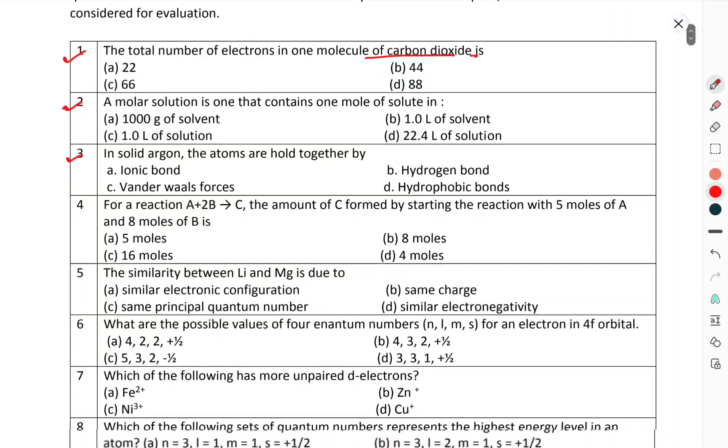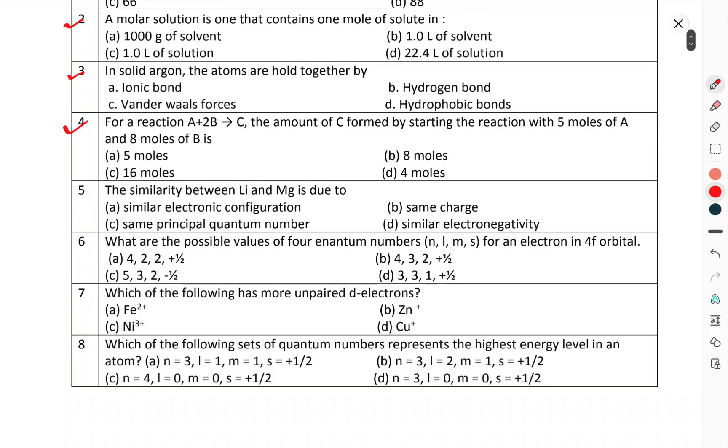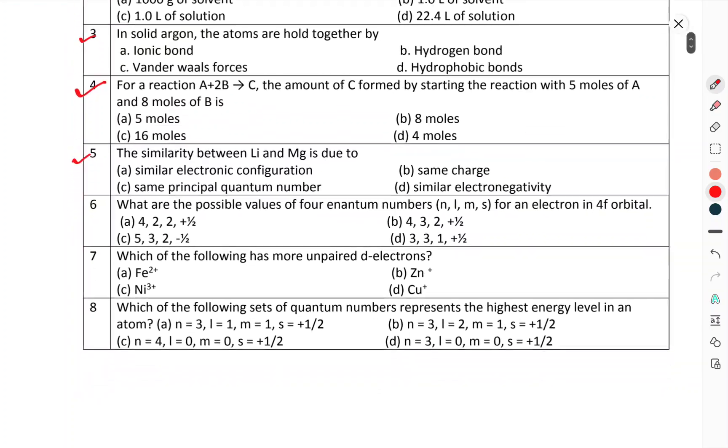Question number 3: In solid argon, the atoms are held together by. Question number 4: For a reaction A plus 2B tends to C, the amount of C formed by starting the reaction with 5 moles of A and 8 moles of B. Question number 5: The similarity between lithium and magnesium is due to.